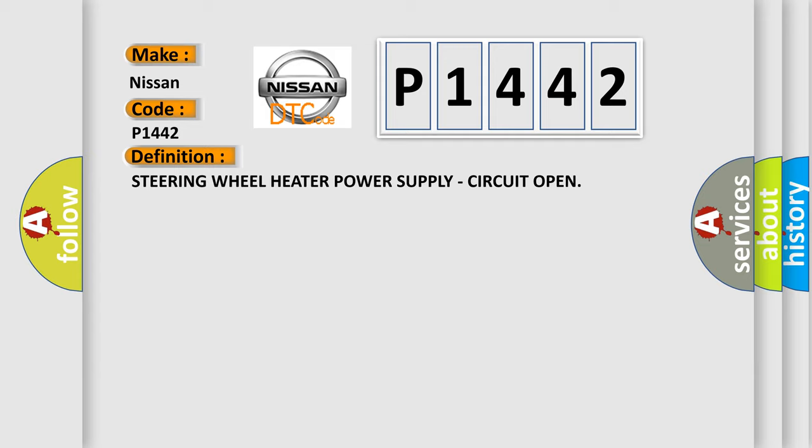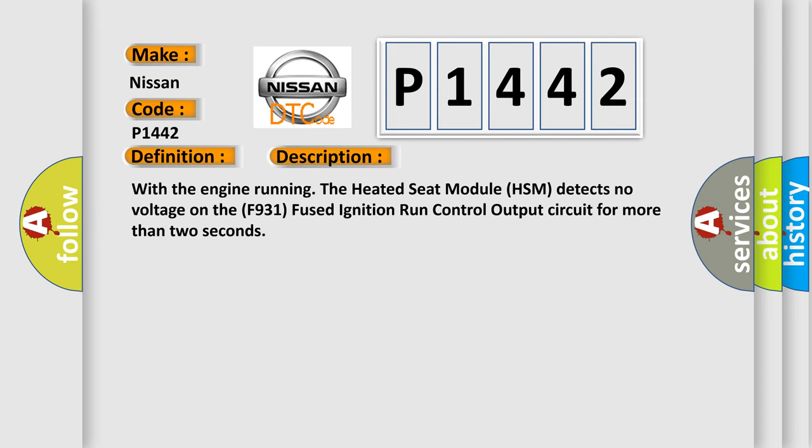And now this is a short description of this DTC code. With the engine running, the heated seat module HSM detects no voltage on the F931 fused ignition run control output circuit for more than two seconds.